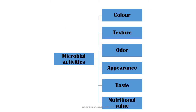You can also observe microbial activity on vegetables, rice, and cheese. Microbial activities change the color, texture, odor, appearance, taste, and the natural nutritional value of food.